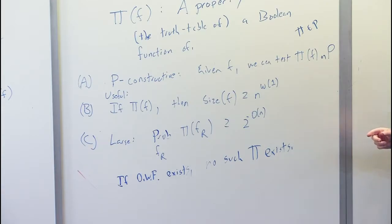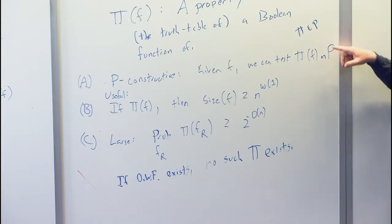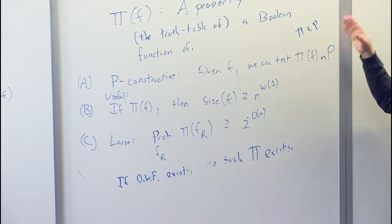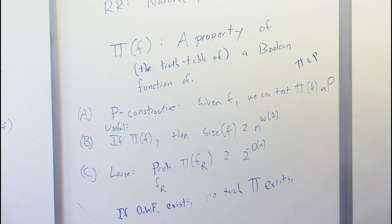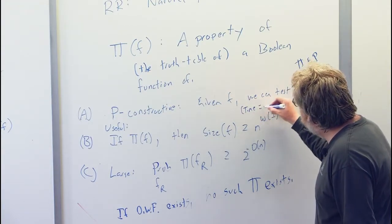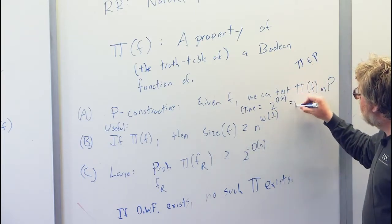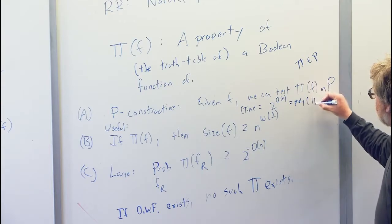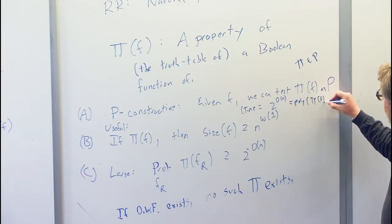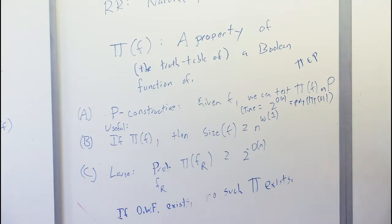Where F is given as a truth table — this means 2 to the order N time, i.e., polynomial in the length of the truth table.